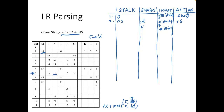When a reduction happens, state 5 is popped from the stack. The new top of the stack is 0. After every reduction, we perform a goto. We look up goto[0, F] — it gives 3. So 3 is pushed onto the stack.